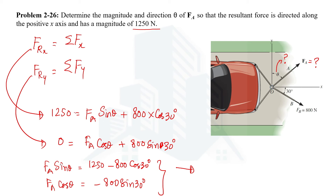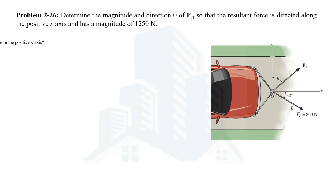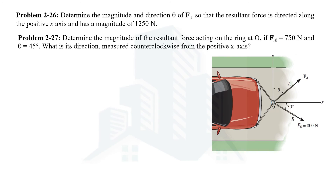After dividing, FA cancels and we get tan(θ) equal to some values. On simplifying, we take the inverse tangent and get θ = 54.3 degrees. Once we have the value of θ, substituting back into either equation gives us the value of FA. On simplifying, FA = 686 newtons. Now let's solve Example 27, where FA = 750 newtons and θ = 45 degrees, and we need to find the resultant force magnitude and direction.